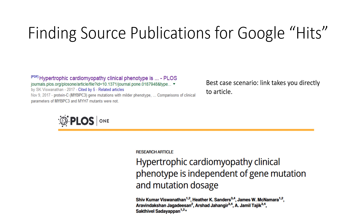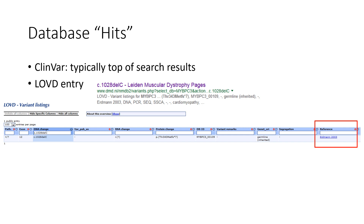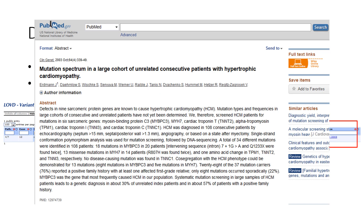Using the search string for that MYBPC3 frameshift variant, one of your first Google hits looks really promising and indeed takes you directly to the actual article in PLOS 1 that contains your variant — this is the best case scenario. Other links you'll often see are to database entries for your variant in ClinVar, which tends to be at the top of Google search results. You may also find links to an LOVD entry, which when you click on the link takes you into LOVD. For this variant, we see there is a reference cited which we'd want to find and review if we hadn't already, and clicking on the link takes you to the PubMed entry for the article.